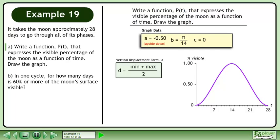Now we'll find the vertical displacement. The minimum of the graph is 0 and the maximum is 1. This gives us d equals 0.50.